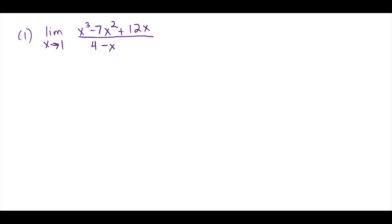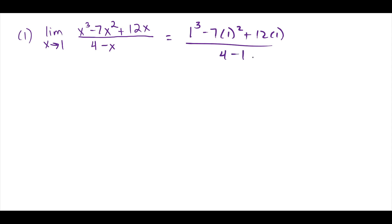For this first question, and all the questions we do, the first thing we should try is evaluating the limit by direct substitution. The limit is as x approaches 1, so we replace every x with 1: we have 1 cubed minus 7 times 1 squared plus 12 times 1 over 4 minus 1. Simplifying: 1 minus 7 is negative 6, plus 12 is 6, and 6 divided by 3 gives us 2. So our final answer is 2.